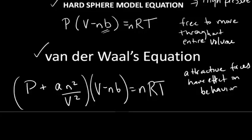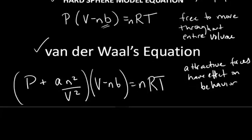You don't need to memorize it necessarily, but you should be aware of it and know how to use it, and know that this term, the NB term, is correcting for the volume, and the A times N squared over V squared is correcting for the pressure.